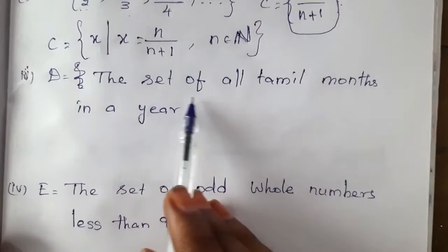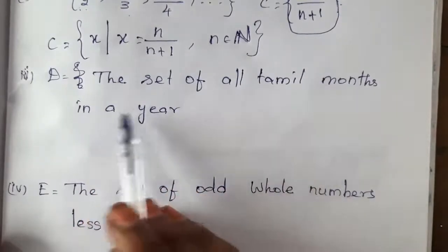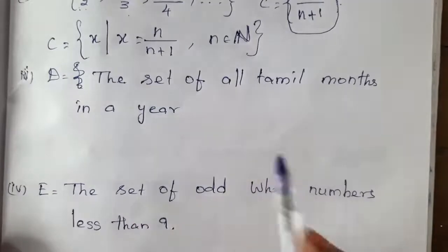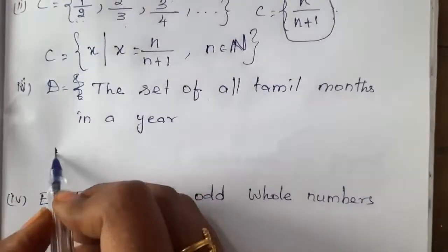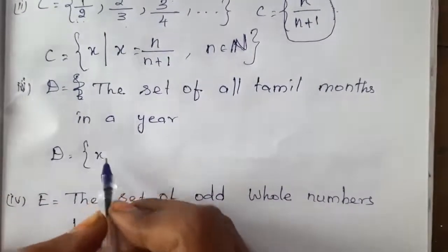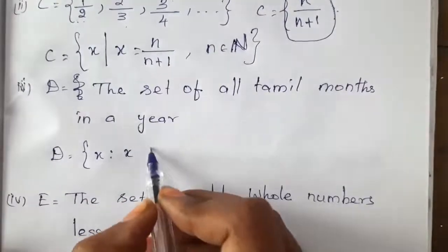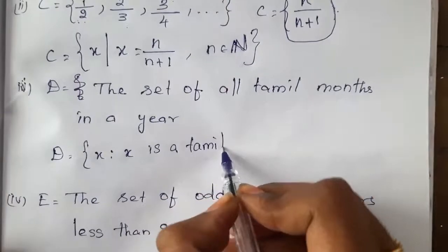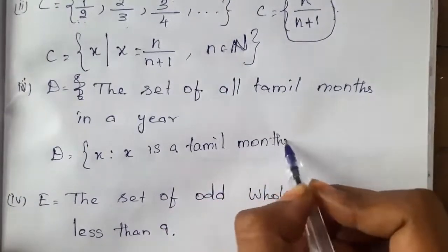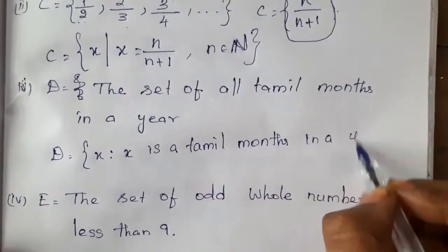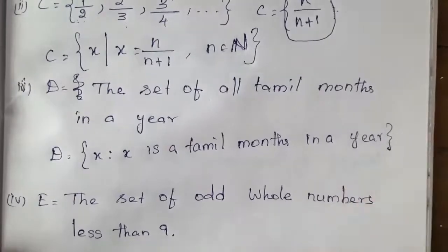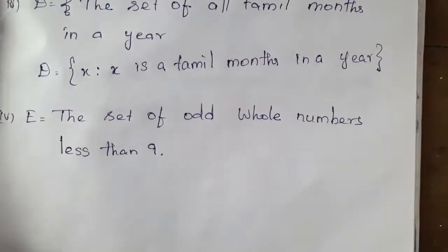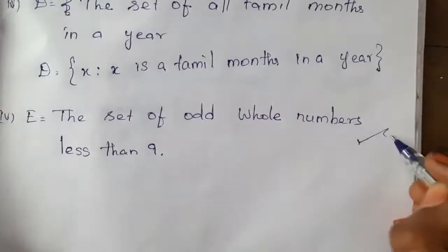Set D = the set of all Tamil months in a year. We write in set builder form: D = {x | x is a Tamil month in a year}. That's all — a simple thing.